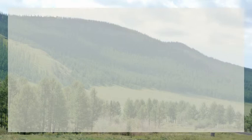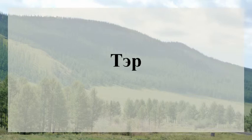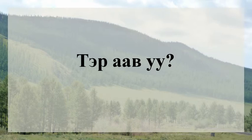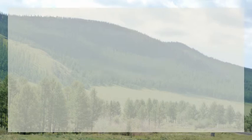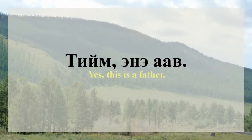With this information in hand, we are ready to produce simple yes-no questions. It is possible to take a word like 'av' for father, add a question particle — 'avo' — to create the simple question 'Is this a father?' The word 'this' is implied in this form of question. However, you can also explicitly state 'this' and 'that' by adding the words 'en' (this) and 'ter' (that). For example: 'En avuu?' — 'Is this a father?' and 'Ter avuu?' — 'Is that a father?' Some example answers: 'Ugui, ter av bish' — 'No, that is not a father.' 'Tiim, en avuu' — 'Yes, this is a father.'